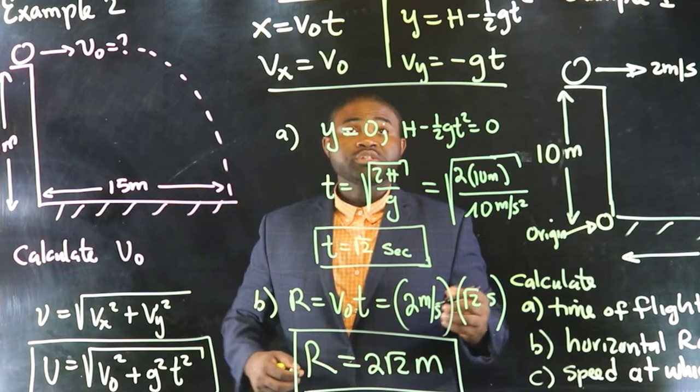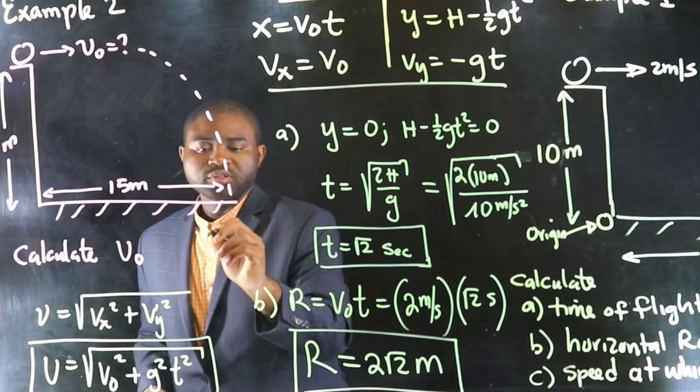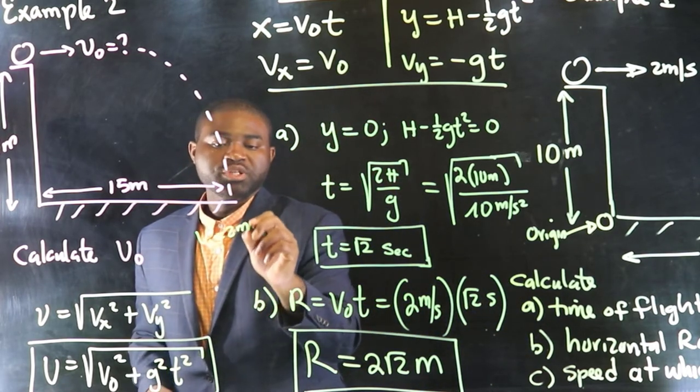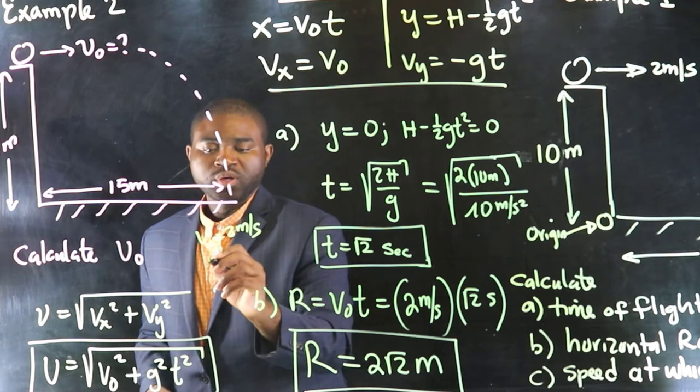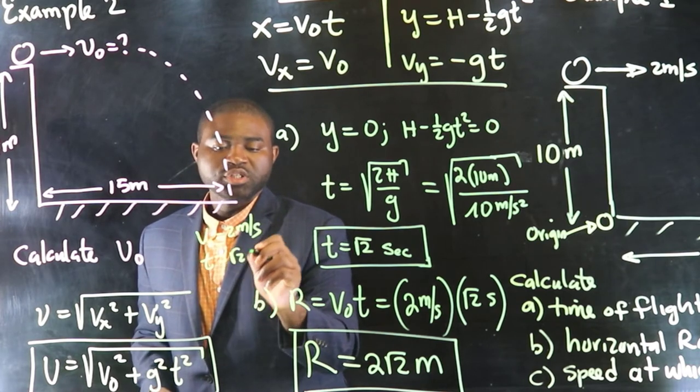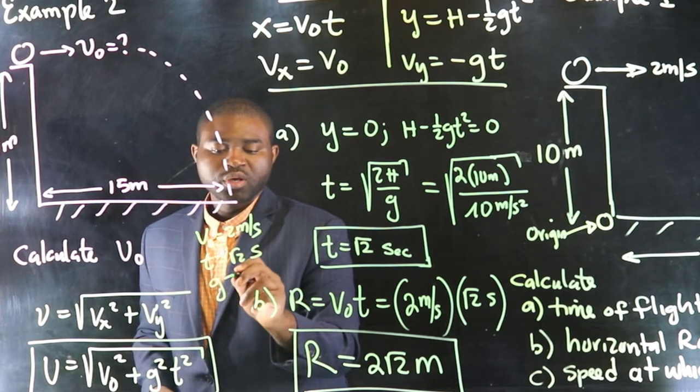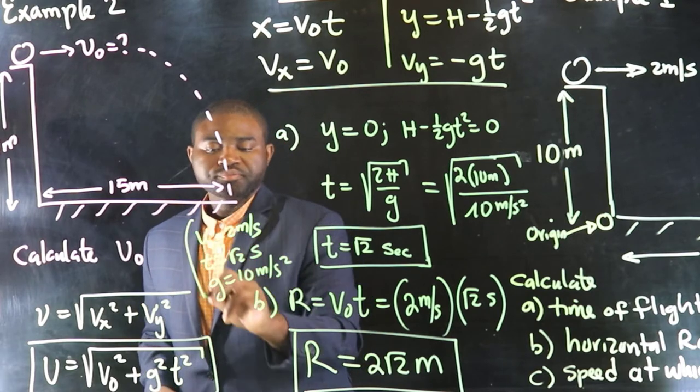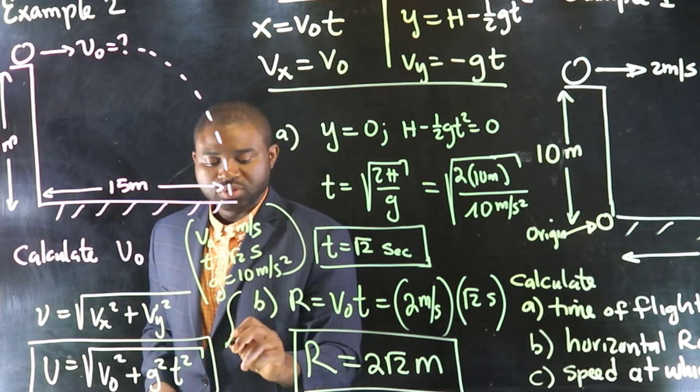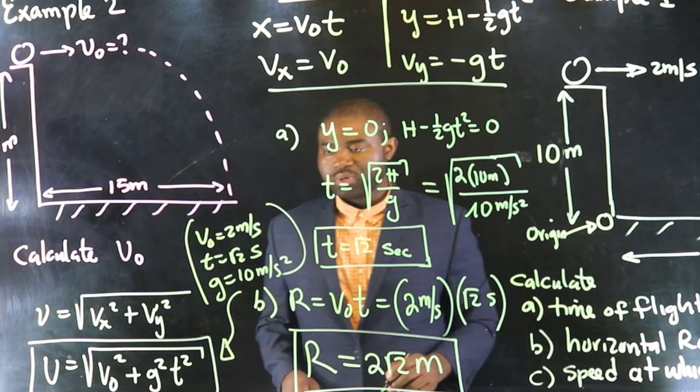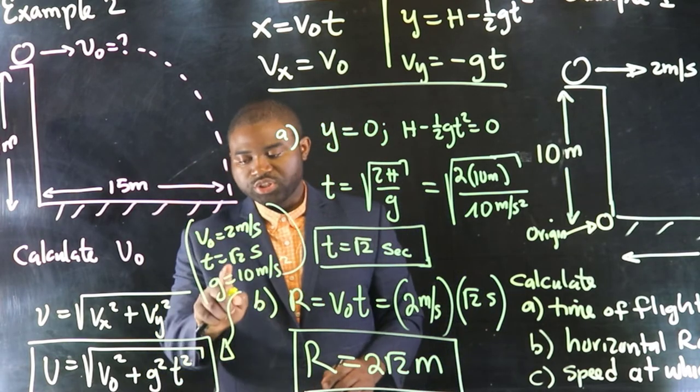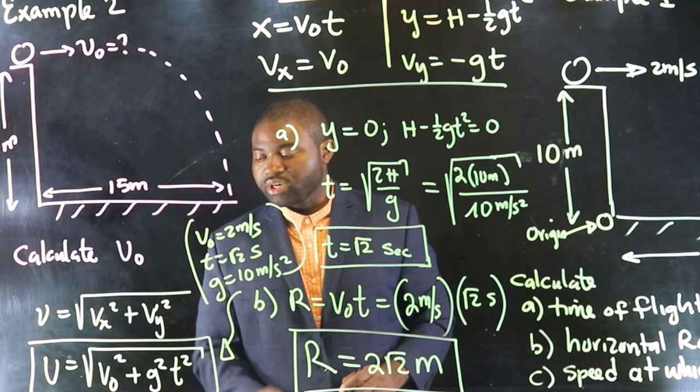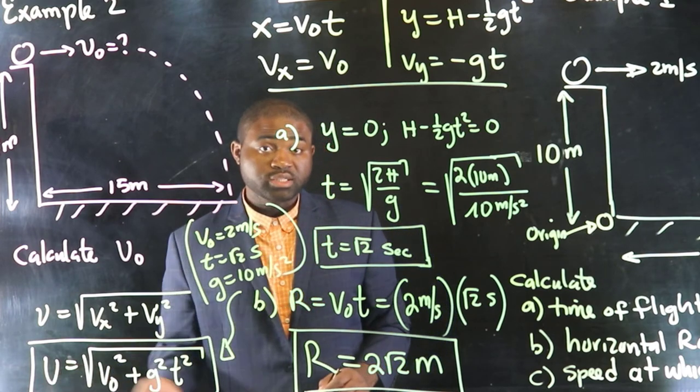v naught is 2 meters per second, t is root 2 seconds, and g is 10 meters per square second. So, you should be able to substitute v naught here, g here, and t here to be able to calculate that speed.